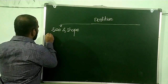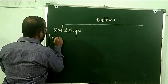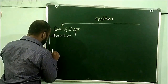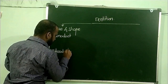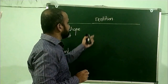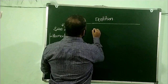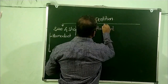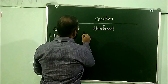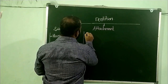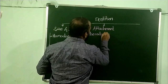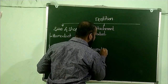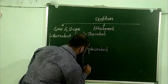Accordingly, the dentition is classified into the Homodont condition and the Heterodont condition. The second basis for classification of dentition is the attachment. Accordingly, the dentition is classified into three types: Thecodont, Pleurodont, and Acrodont.